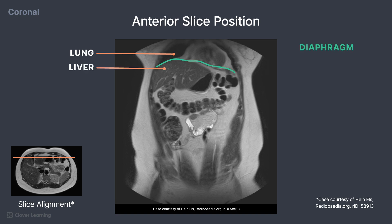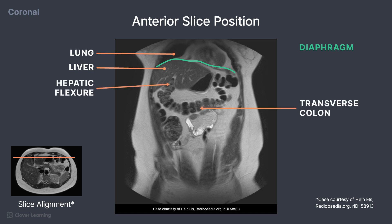Again, portions of the colon that are visible include the transverse colon, the hepatic flexure, and the splenic flexure. We can also see a small portion of the ascending colon just inferior to the liver.